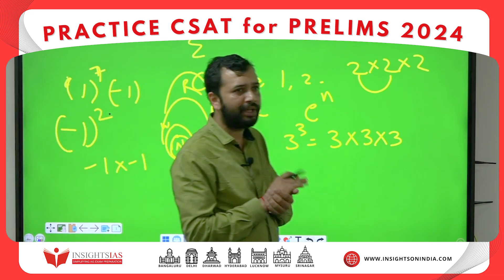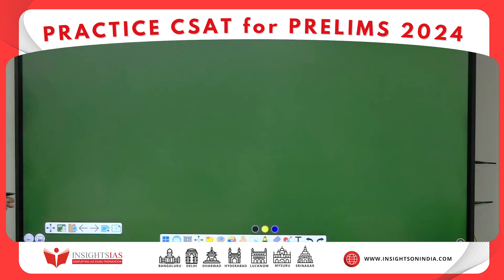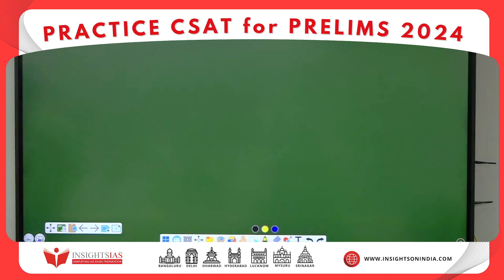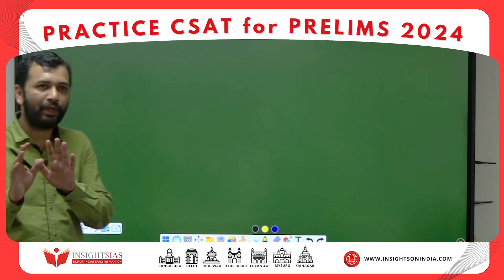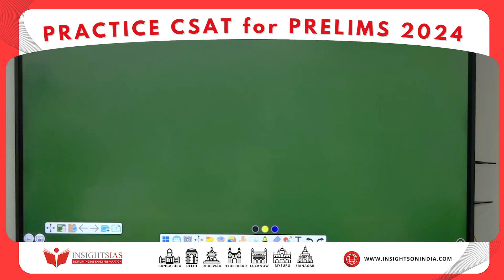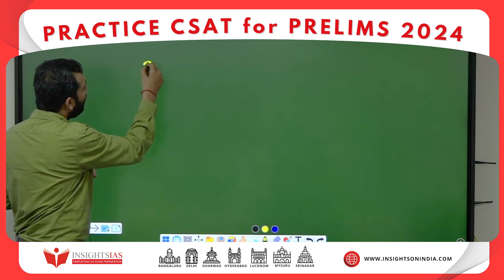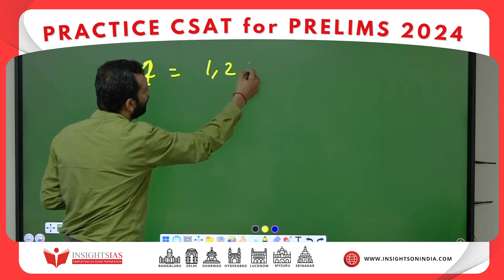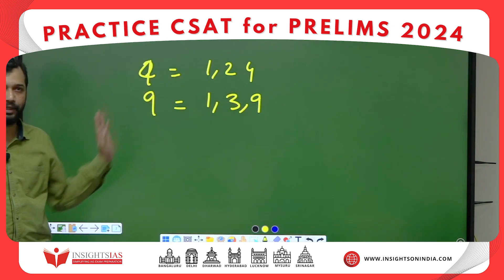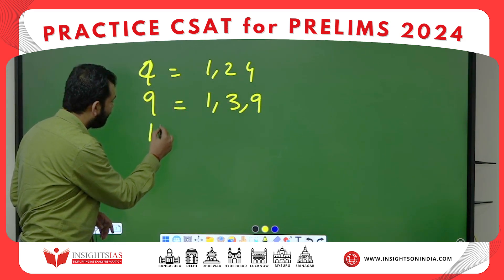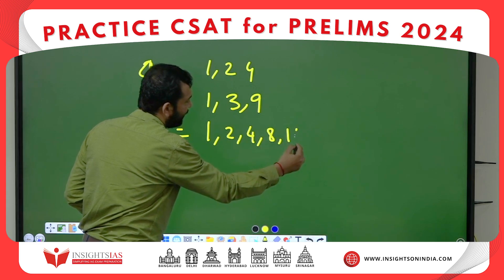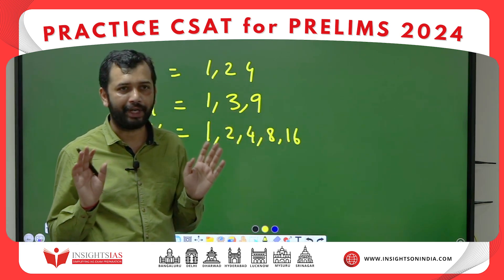A composite number can be even or it can be odd. Regular non-square numbers will always have an even number of factors. But a square number will always have an odd number of factors. For example, 4 = 2² has factors 1, 2, 4 — that is 3 factors. For 9, factors are 1, 3, 9 — again 3 factors. For 16, factors are 1, 2, 4, 8, 16 — that is 5 factors. Always an odd count.